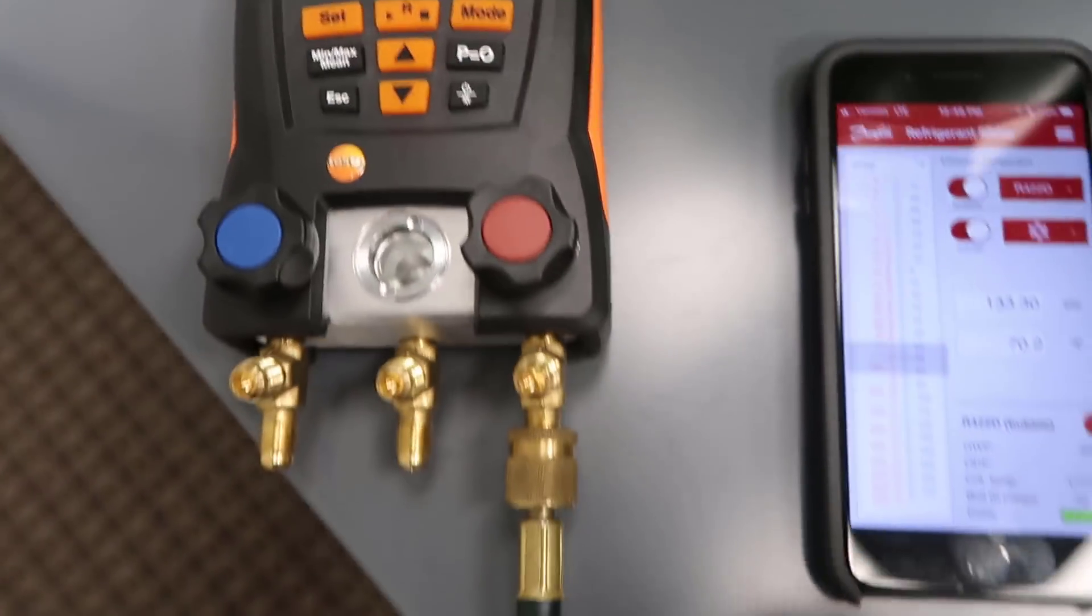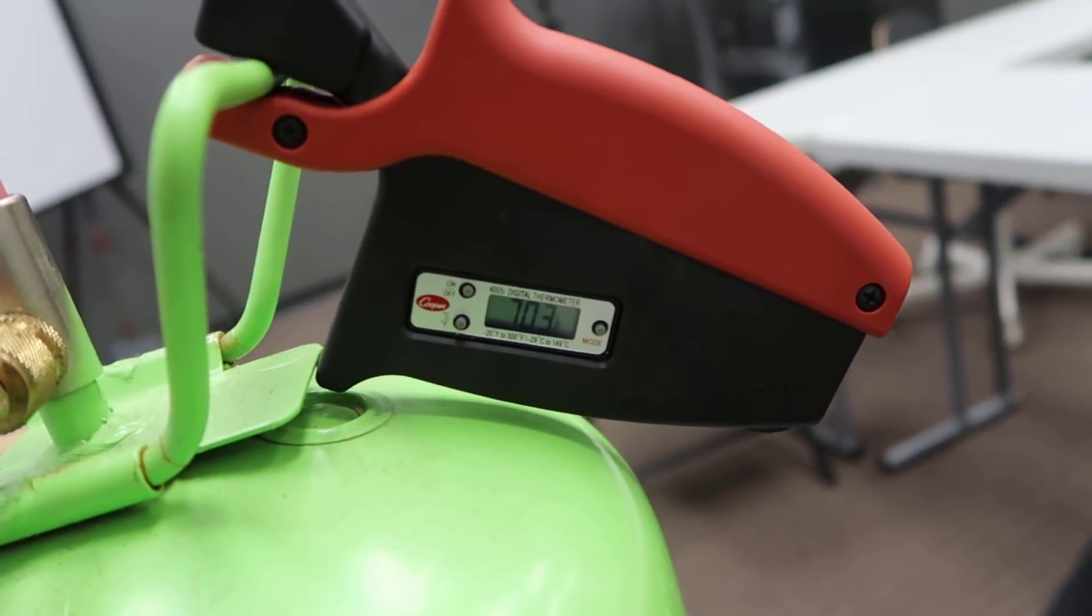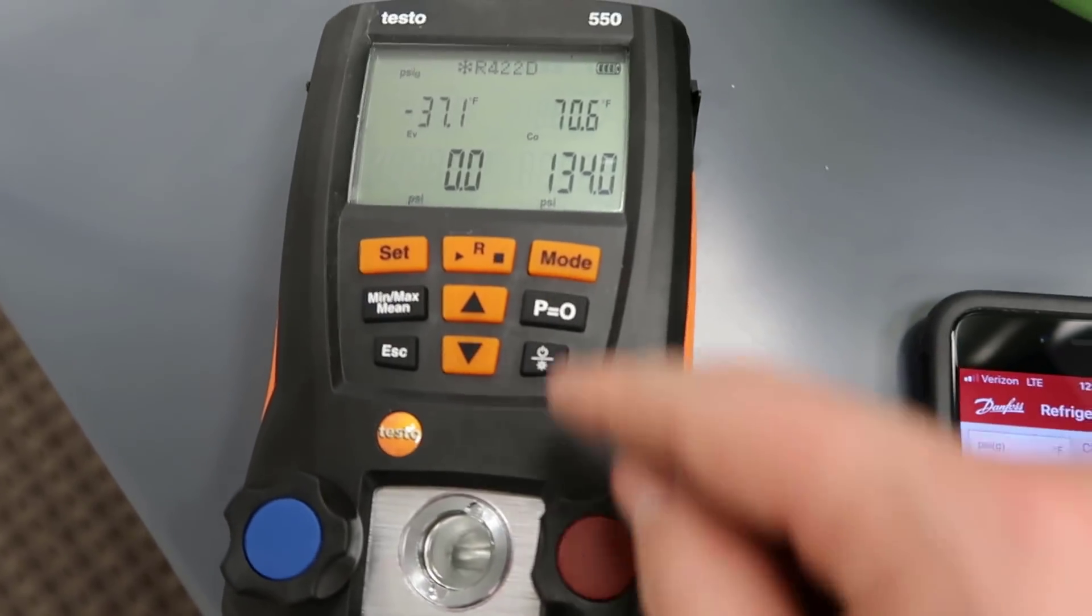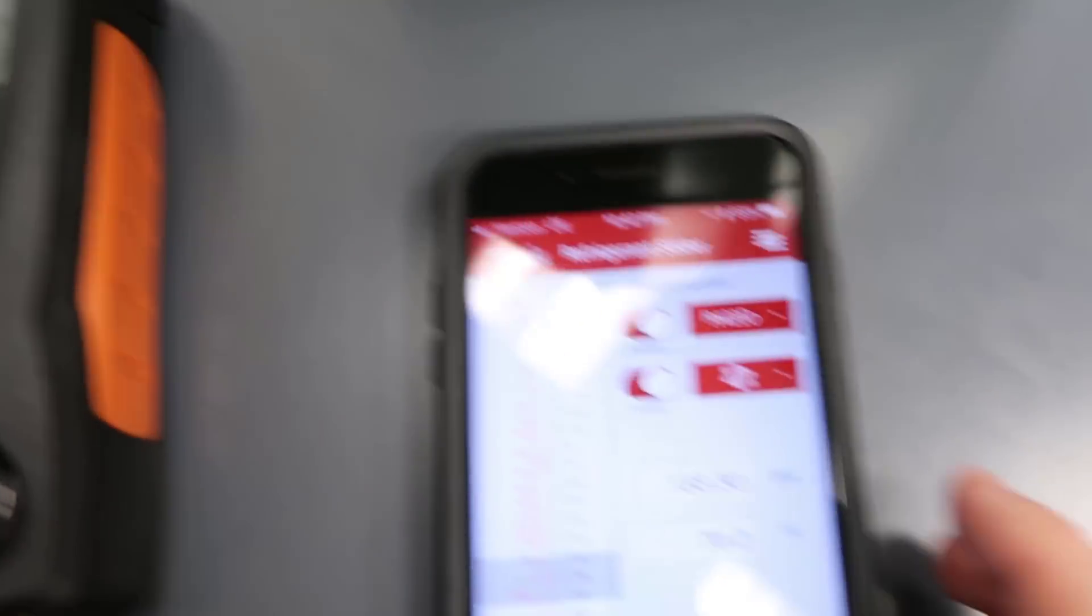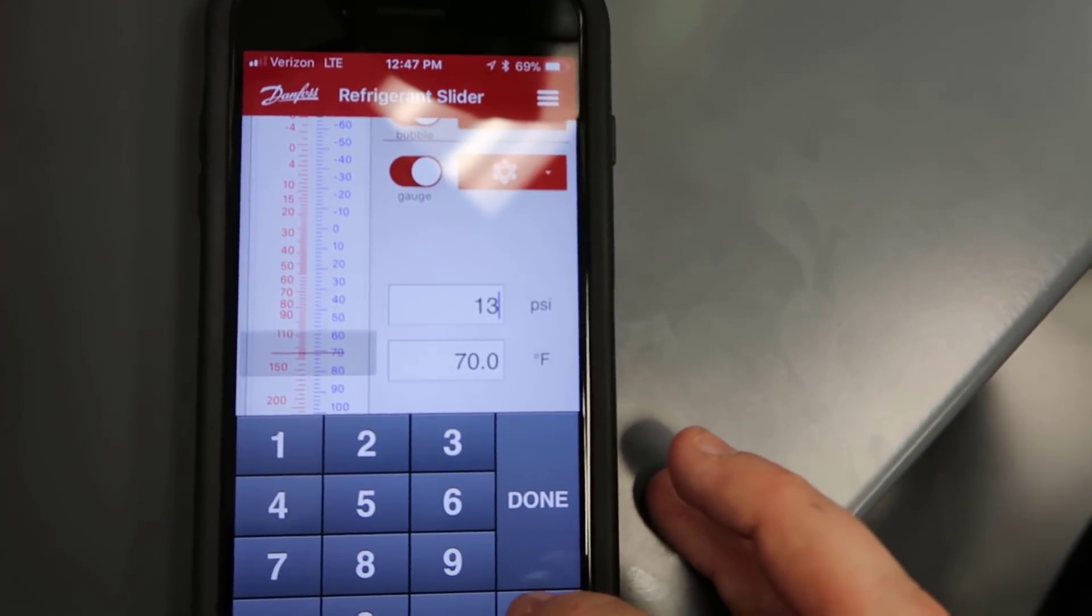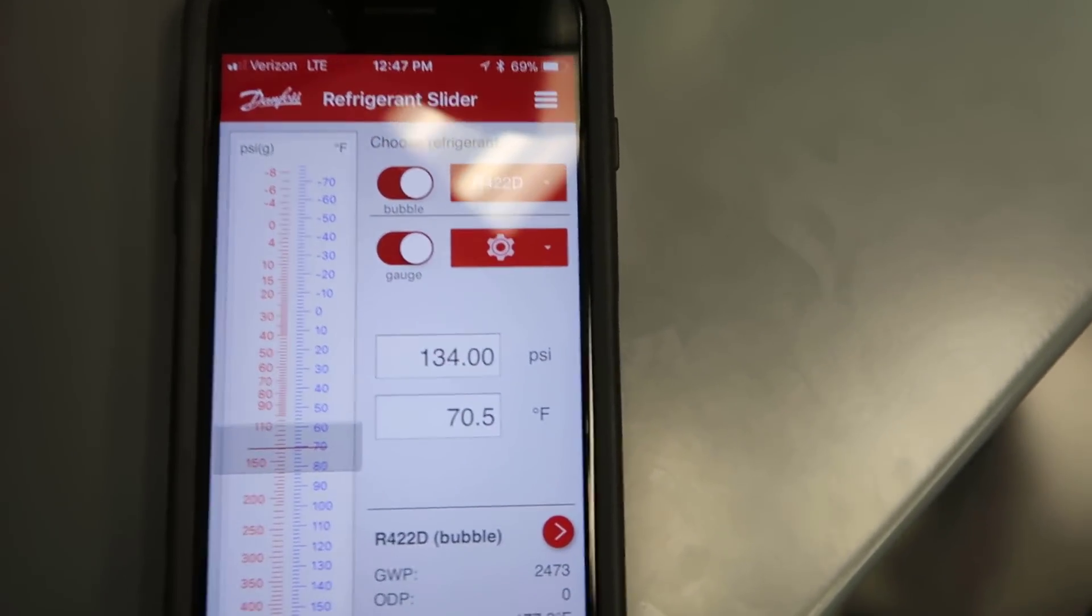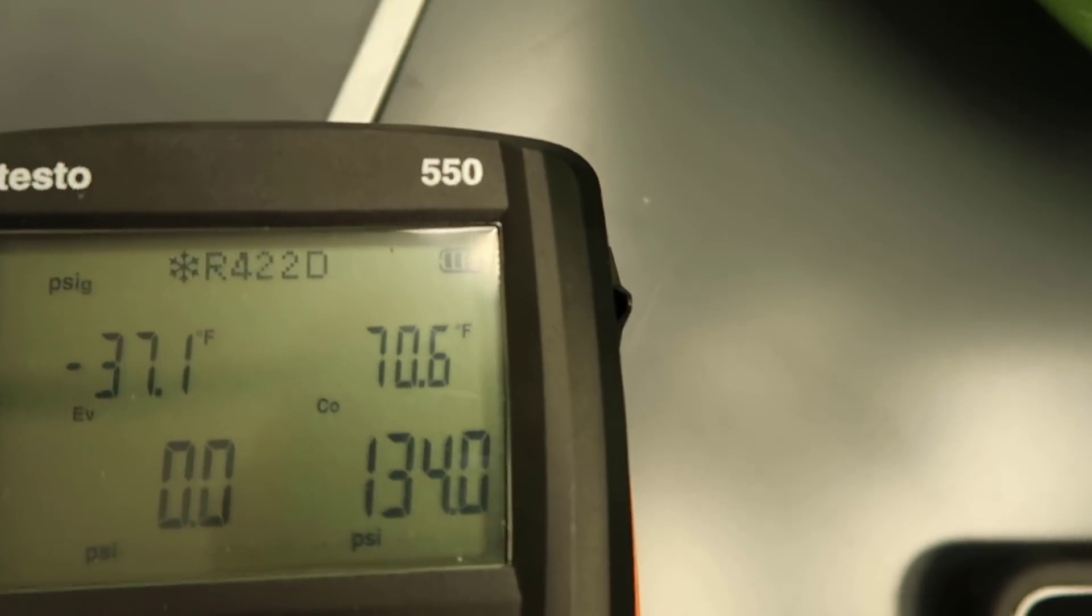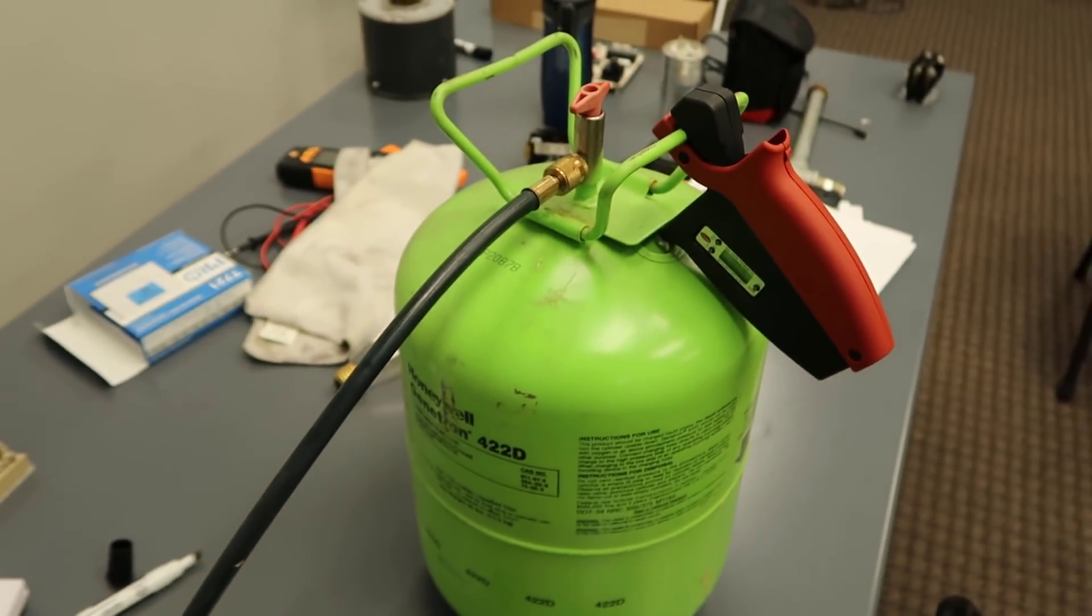I've got this connected to a set of Testo 550s. I've got a tank of Honeywell Gentron 422D. You can see the ambient temperature of this tank is 70.3 degrees, which matches up very closely with a connection to the high side. Testo is automatically looking for the bubble point because it's looking to calculate subcool. If I go over here and I punch in this pressure, 134 psi on the Danfoss refrigerant slider app, you'll see that it matches right up, 70.5, so within a couple tenths of a degree. Now, if I change it over to dew, you'll see that it's significantly higher, 75.8. So it's clearly not dew point. This tank is clearly not at dew point in its static state. It's at bubble point, and it is not at the average temperature.